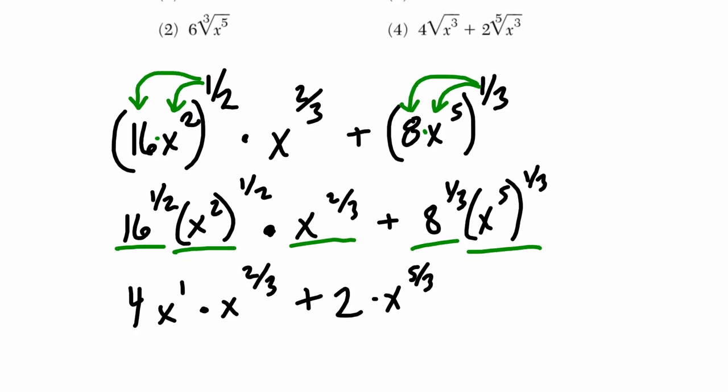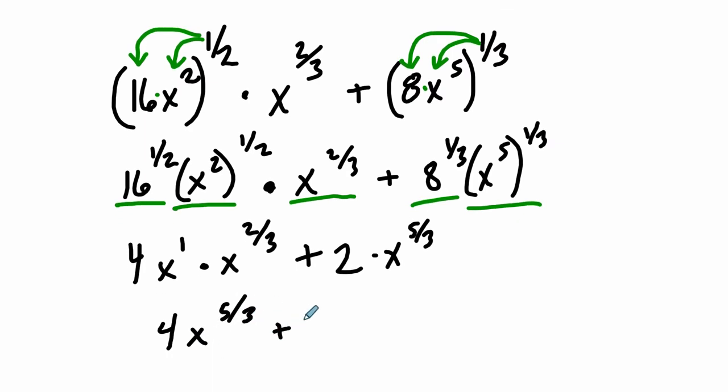And now I'm almost there. Now I look at this and I say, well, here multiplying 2 equal bases. So what do I do? I add my exponents. And I get 4x to the first. So 1 plus ⅔. It's 1 and ⅔, or 5/3. I'm thinking 1 is 3 over 3. And 3 over 3 plus 2 over 3 is 5 over 3. So it's 4x to the 5/3 plus 2x to the 5/3. And what do we do here?